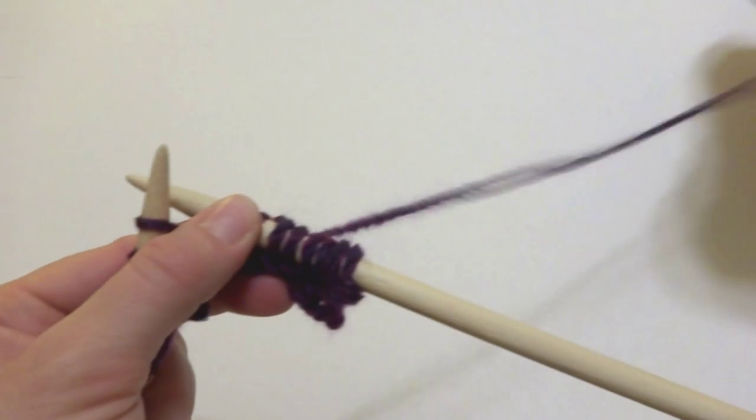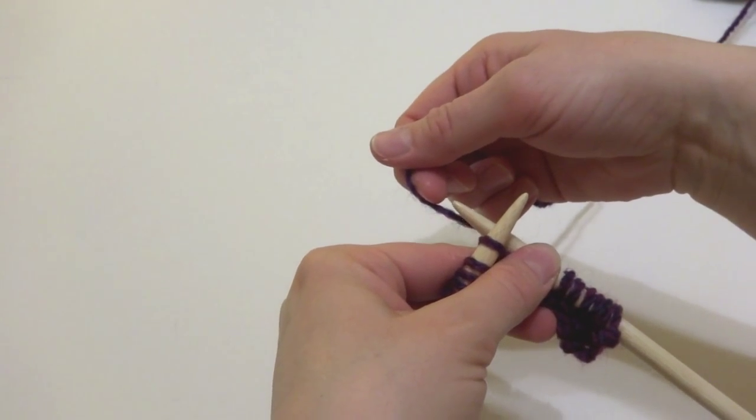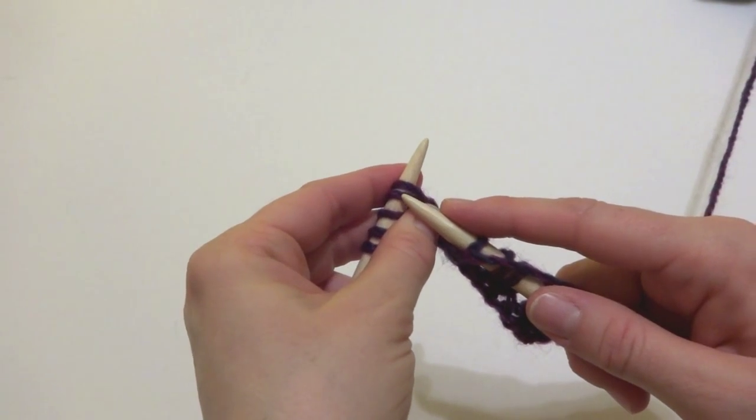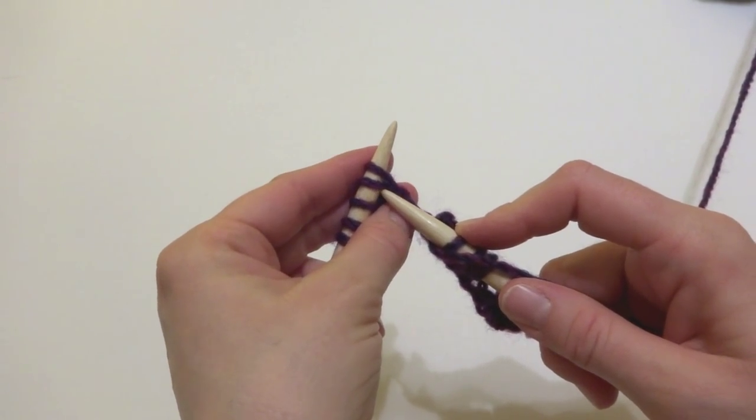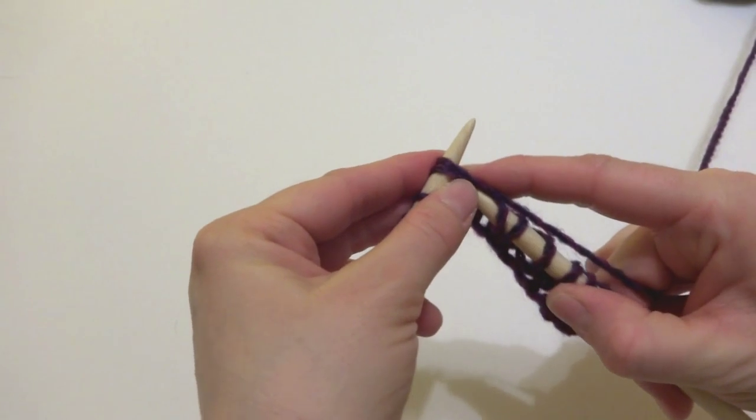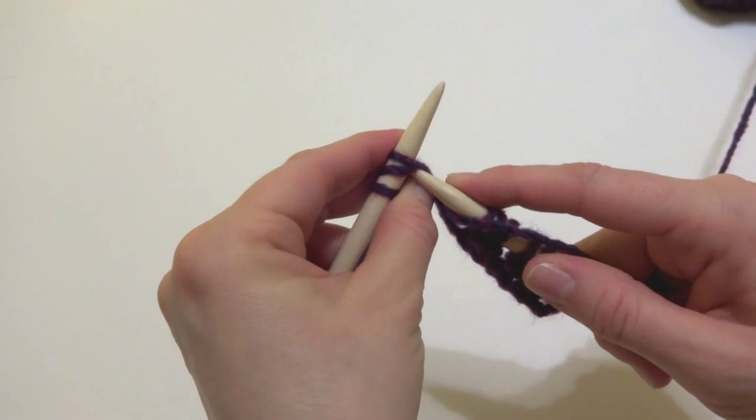If you've never done the yarn over or the knit two together, simply wrap the yarn around your right needle to do the yarn over. And then for the knit two together, insert your needle into two stitches knitwise and then knit as you normally would. So we're yarn over, and knit two together.